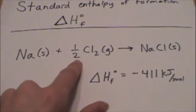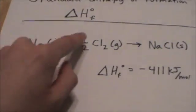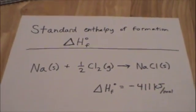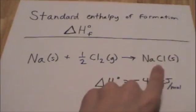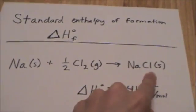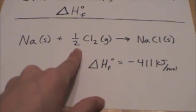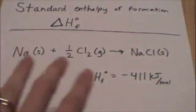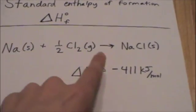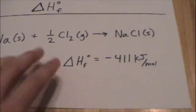You might say, wait — we learned how to balance equations where you'd multiply the whole thing by two and say two sodiums plus one chlorine gives two sodium chlorides. But the definition for the standard enthalpy of formation of sodium chloride is to make only one mole of sodium chloride, so you'll see fractions in your balanced equations. The standard enthalpy of formation of sodium chloride is negative 411 kilojoules per mole.